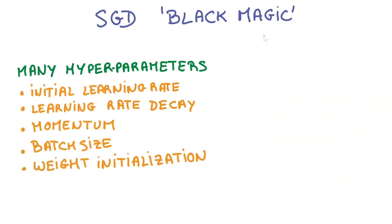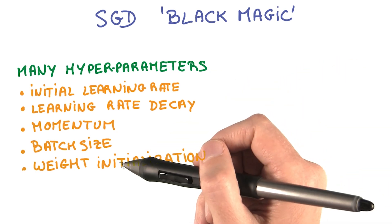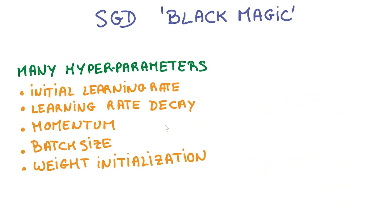This is where SGD gets its reputation for being black magic. You have many, many hyperparameters that you could play with. Initialization parameters, learning rate parameters, decay, momentum, and you have to get them right.